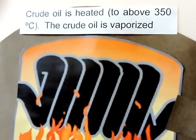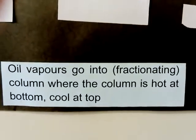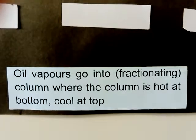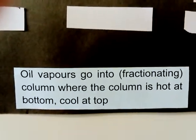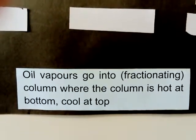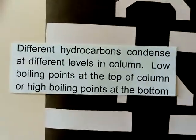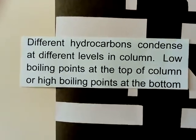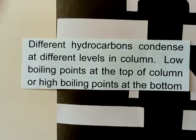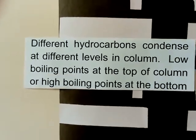The oil vapors then move into the fractionating column. The bottom of the column is hotter and the top is cooler. Different length chains condense at different points — the shorter the chain, the lower the boiling point, so the higher up the column they get.